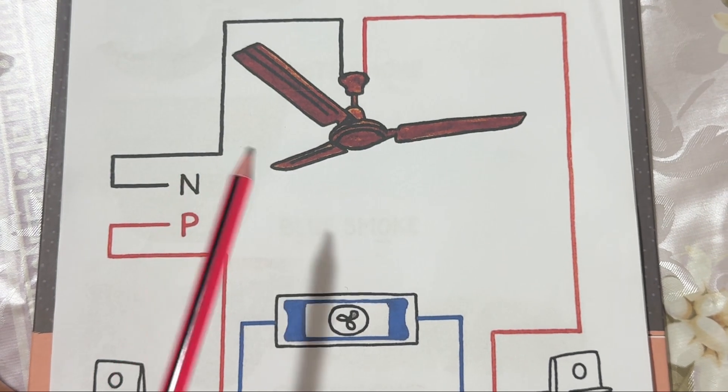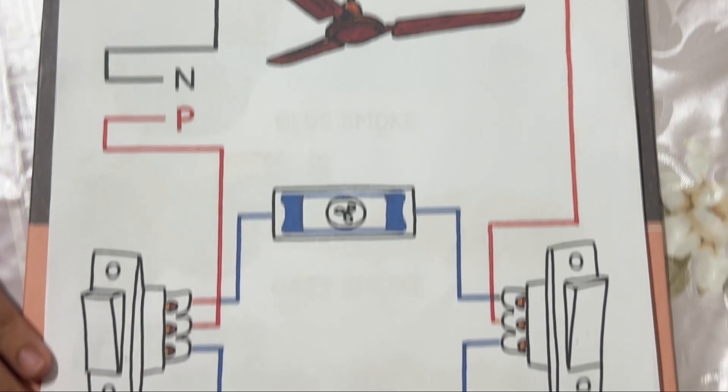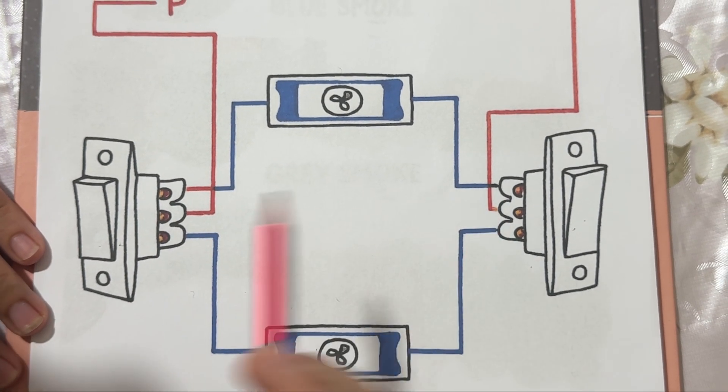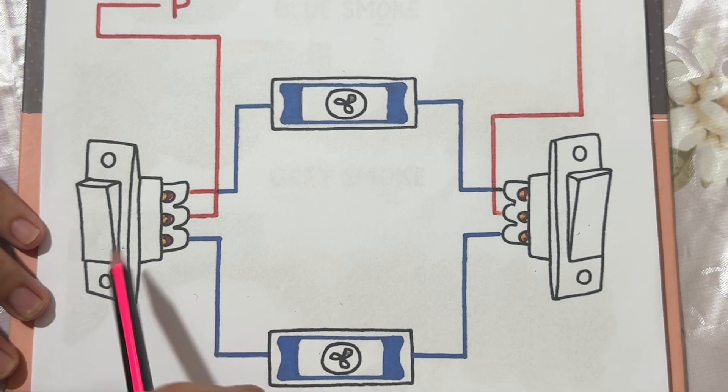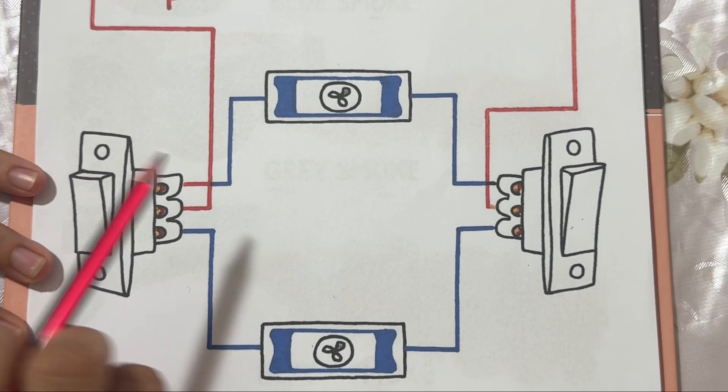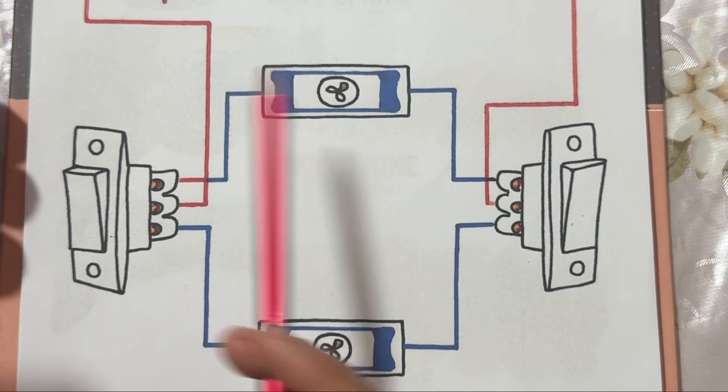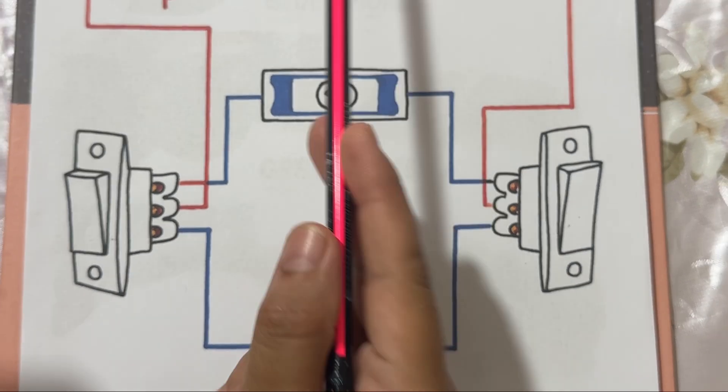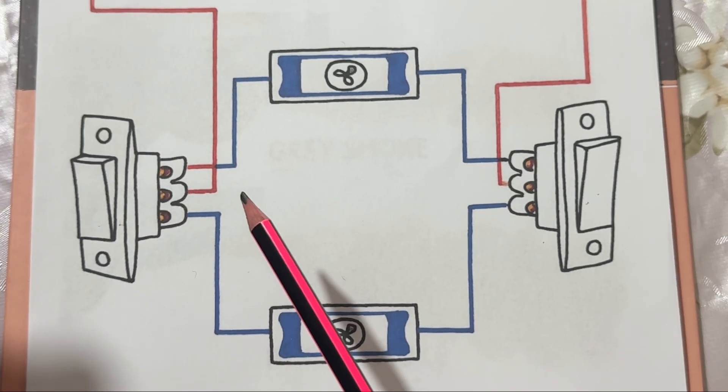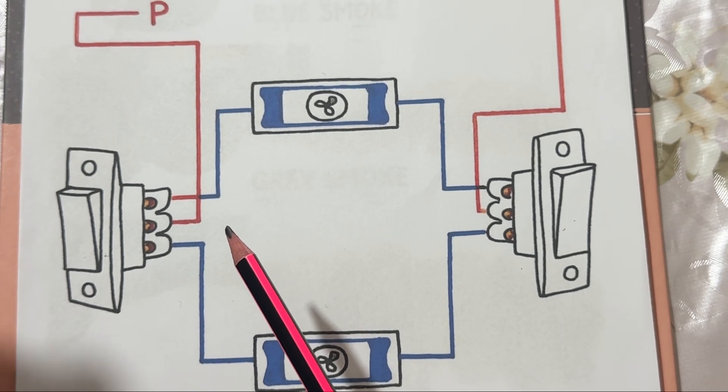When both switches are off, the fan will stop. Both regulators are connected in series with the switches. Their job is to control the speed of the fan by increasing or decreasing the resistance. They adjust the voltage supply to the fan, which in turn changes its speed.